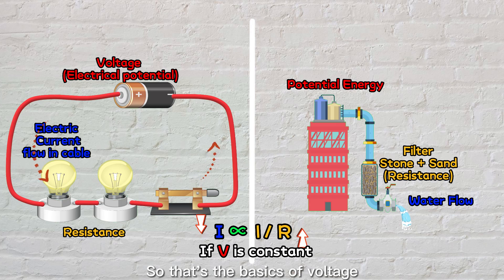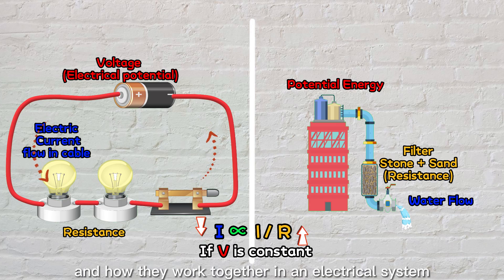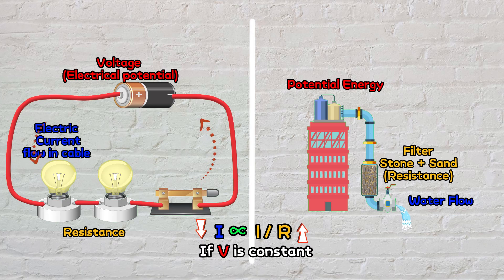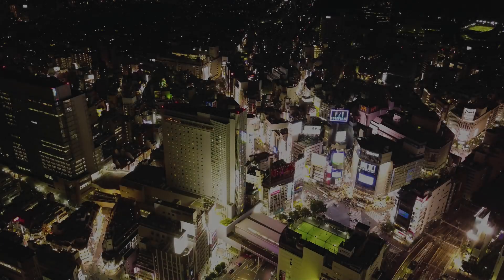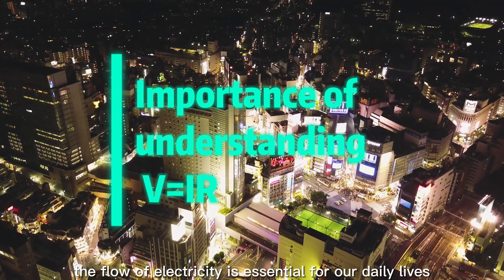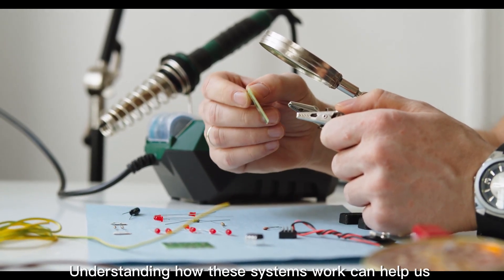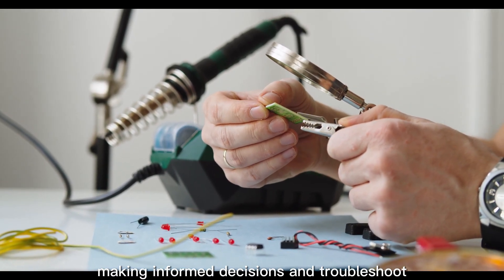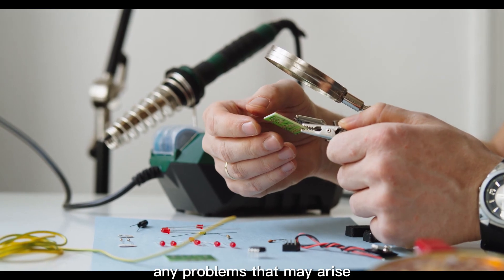So, that's the basics of voltage, current, and resistance, and how they work together in an electrical system. Just like a water system, the flow of electricity is essential for our daily lives. Understanding how these systems work can help us make informed decisions and troubleshoot any problems that may arise.